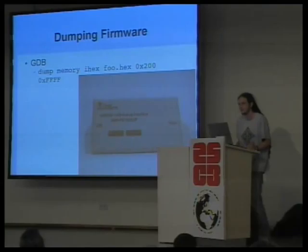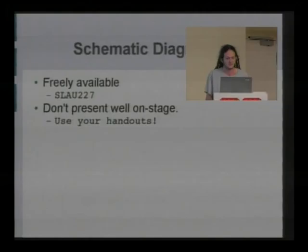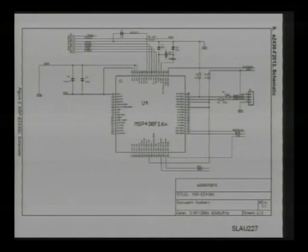The initial motivation for dumping this was to gain Linux support on the radio version of the board, which is red. Its firmware is incompatible with Linux, and you can either run it through VMware — which isn't terribly reliable — or you can copy the firmware from the blue board into it. You do this with GDB. You load up GDB connecting to the target, and then you say dump memory, ihex, then the filename and the address range.